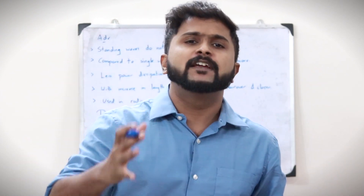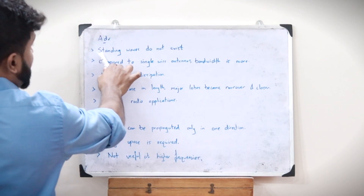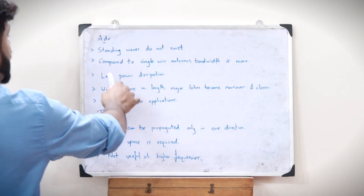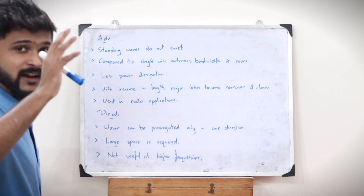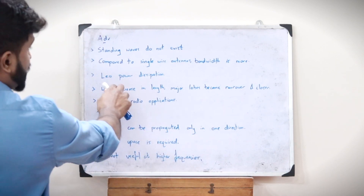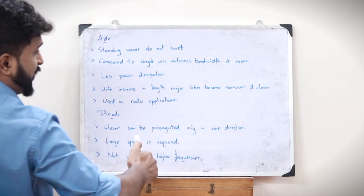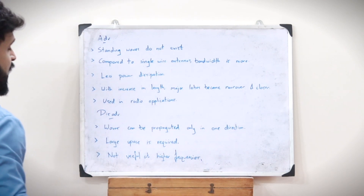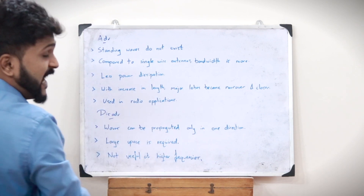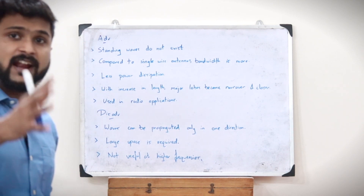Now let us discuss the advantages and disadvantages of using traveling wave antennas. For advantages: standing waves do not exist, and compared to single wire antennas, the bandwidth is more. It has lesser power dissipation, and with an increase in the length of the antenna, the major lobes become narrower and closer to each other, making it useful in radio applications.